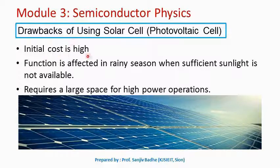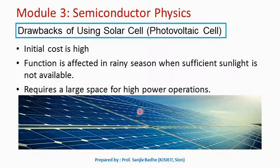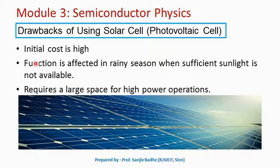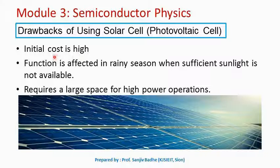Some drawbacks of using solar cells: the initial cost is high, and a large area is required in order to generate a considerable amount of electrical energy. The functioning of a solar cell is affected in rainy seasons when sufficient sunlight is not available. Large space is required for high-power operation. However, once a solar cell power plant is installed, it will be maintenance-free, and in the long run it will be cost-effective, despite the large initial investment required.